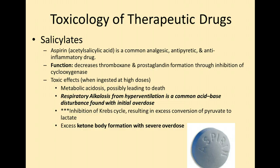Let's talk about the toxicology of drugs. First are salicylates — aspirin, called acetylsalicylic acid. It's a very common analgesic, antipyretic, and anti-inflammatory drug. It functions to decrease thromboxane and prostaglandin formation through the inhibition of cyclooxygenase. Some of the toxic effects when you take too much include metabolic acidosis, which can lead to death, and respiratory alkalosis from hyperventilation with an initial overdose. We also see inhibition of the Krebs cycle, resulting in excess conversion of pyruvate to lactate, and excess ketone body formation with severe overdose.